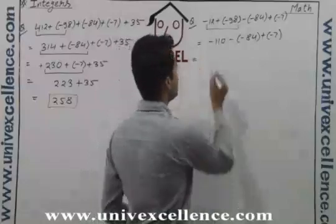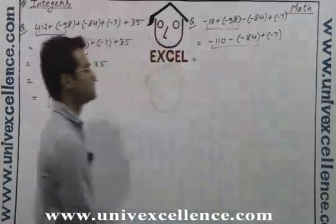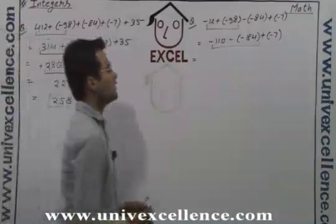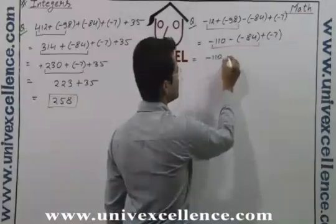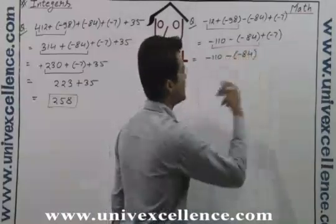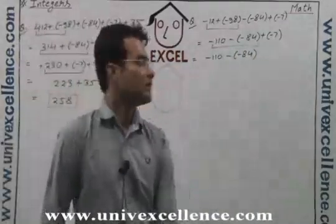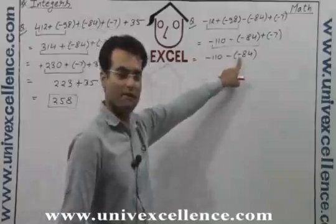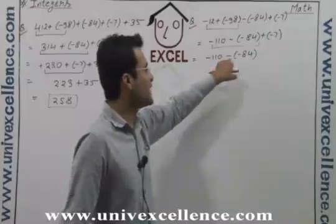After that, choose these two. We have minus 110 and minus minus 84 — so that's the problem, because we have a sign of negative here, we have a sign of negative here, but we have a sign of negative again.